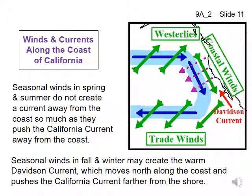Cold, nutrient-rich water from down deep comes up to replace the water pushed away — upwelling. The nutrients fertilize algae like phytoplankton, allowing them to carry out photosynthesis and grow. The phytoplankton become food for zooplankton, who in turn are food for fish. Thus, upwelling creates abundant life along the coast of California. During the winter, coastal winds tend to blow northward along the coast. These winds can create the Davidson current — warm water flowing northward along the coast of California — and shut down coastal upwelling. The California current does not stop or reverse; it is pushed away from the coast a little bit.